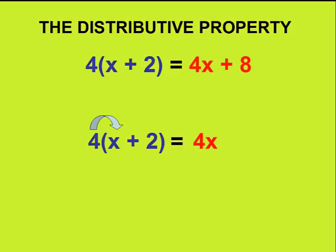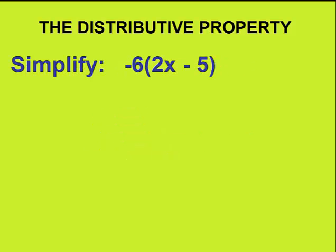Second, we distribute the 4 to the second term in the bracket. And that is how we come up with 4 times 2, which of course gives us 8. This is how the distributive property works. The number in front of the bracket gets multiplied to all the terms inside the bracket. Now let's do another example.